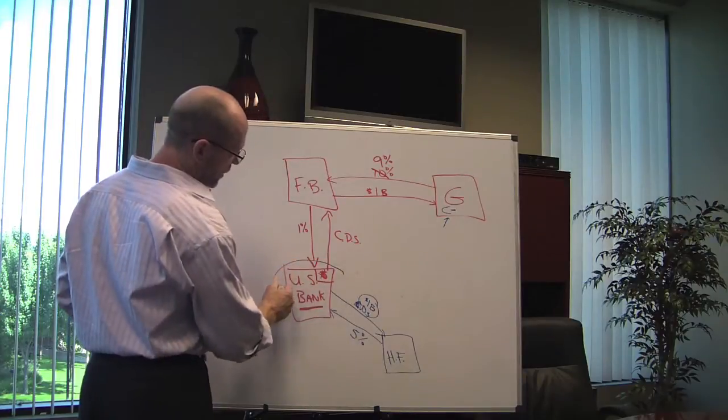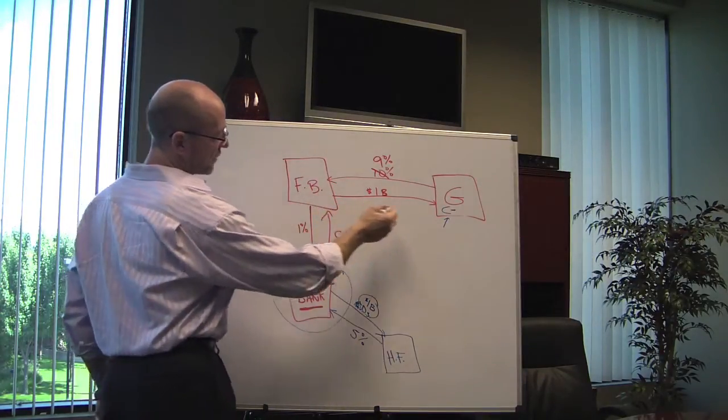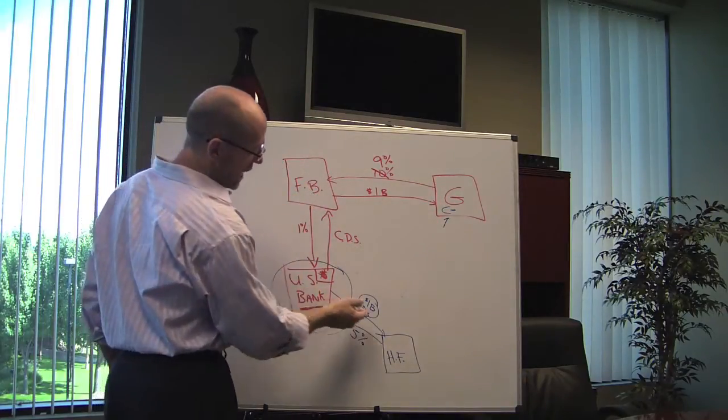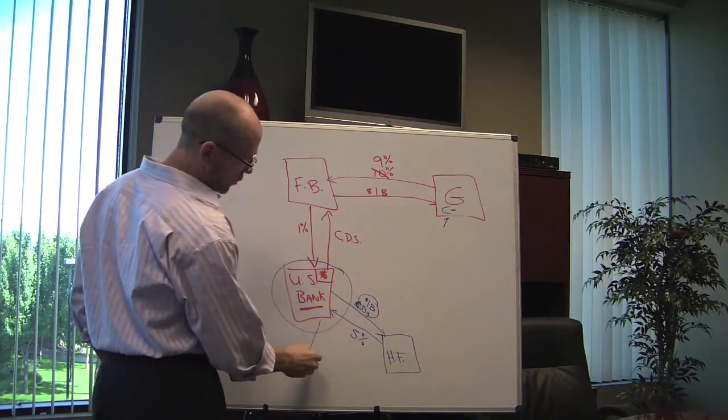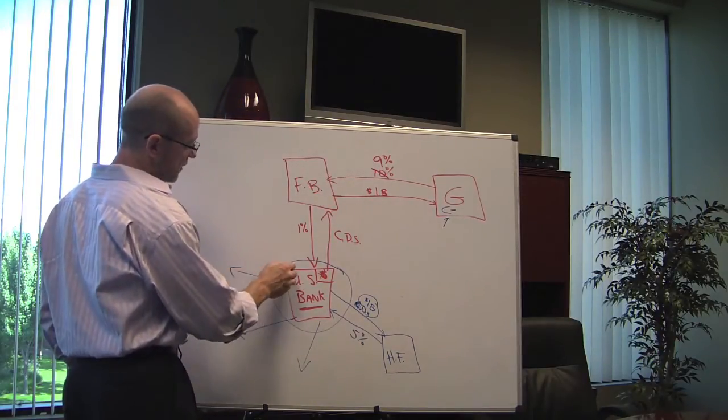Let's bring this back home though. Here we have US Bank in my example, who has issued insurance against a Greek default to this French bank and to the hedge fund, and Lord knows where else. It could be other banks, it could be pension funds, etc. Have you ever heard the initials AIG?